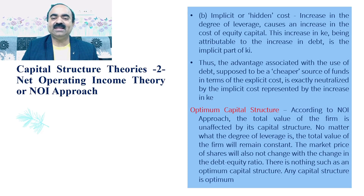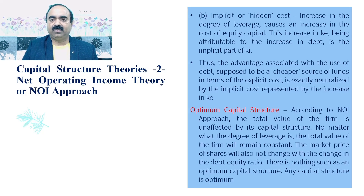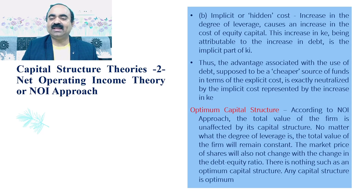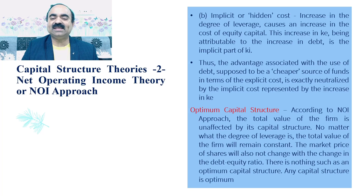The second part of cost of debt is implicit or hidden cost. Increase in the degree of leverage causes an increase in the cost of equity capital. This increase in KE, being attributable to the increase in debt, is the implicit part of KI. Thus, the advantage associated with the use of debt, supposed to be a cheaper source of funds in terms of the explicit cost, is exactly neutralized by the implicit cost represented by the increase in KE.